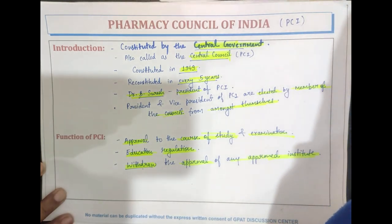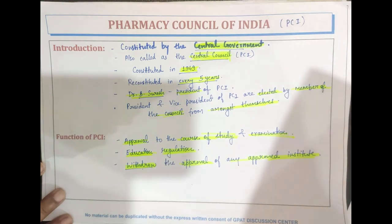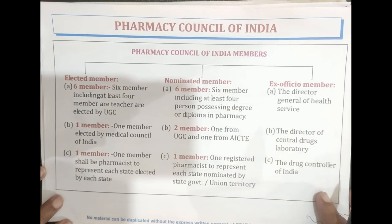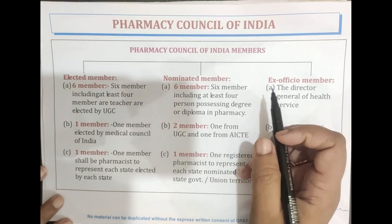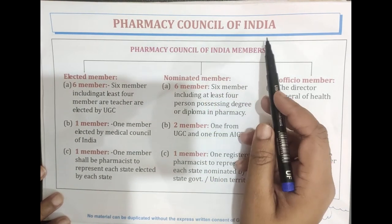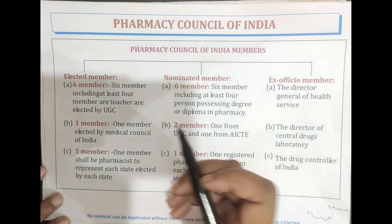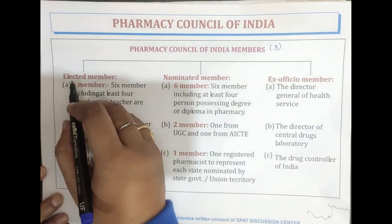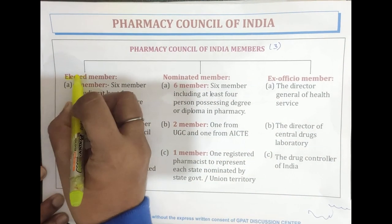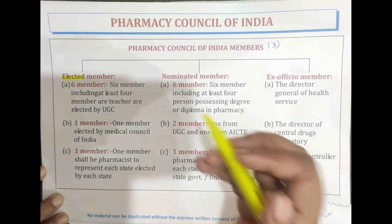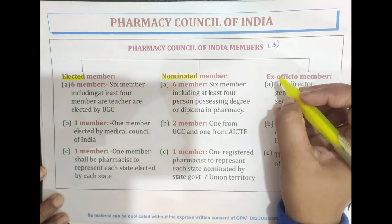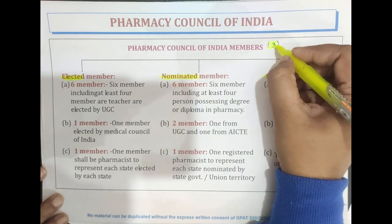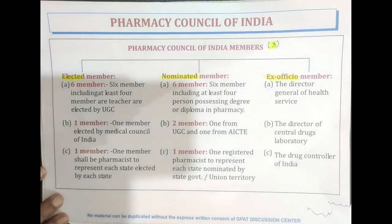Now coming towards the Constitution of Pharmacy Council of India — how many members can be present in this council. PCI is basically made up of three types of members: the first one is elected members, the next one is nominated members, and the last one is ex officio members.